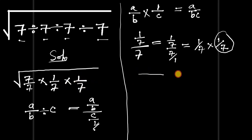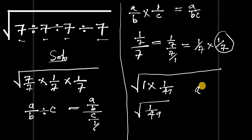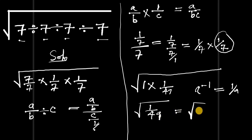So we have an extra factor of one over seven, giving us one over seven times one over seven. Our square root then becomes the square root of seven over seven, which is one, times one over seven times one over seven, which is one over 49. So we now have the square root of one over 49.